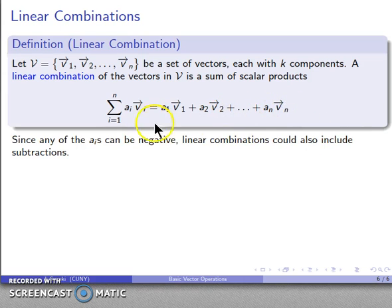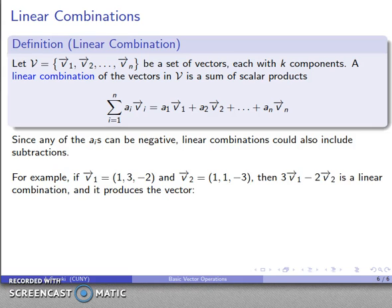Now note that any of the ais can be negative if we're assuming vectors in ℝn. So any of them can be negative, so that means linear combinations could also include subtractions.